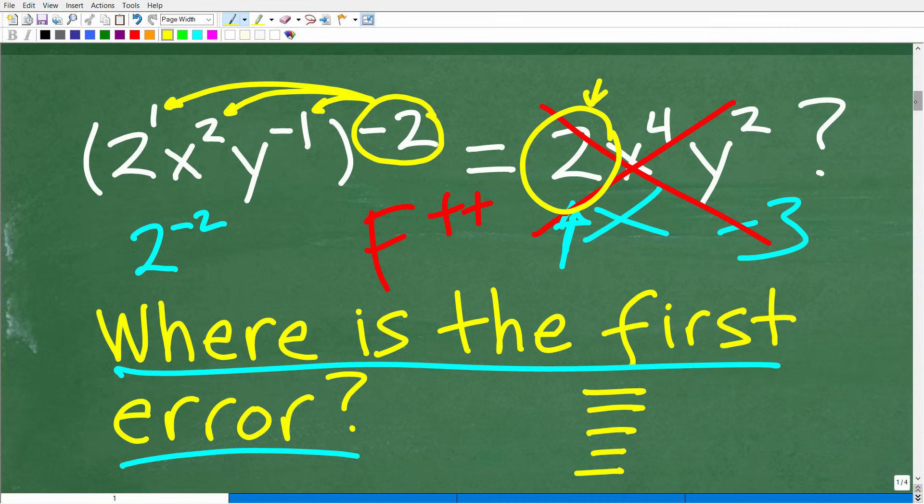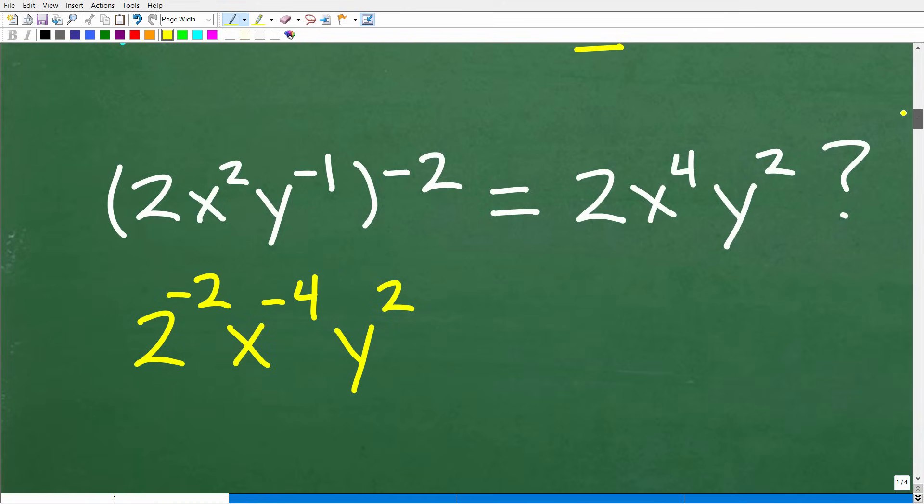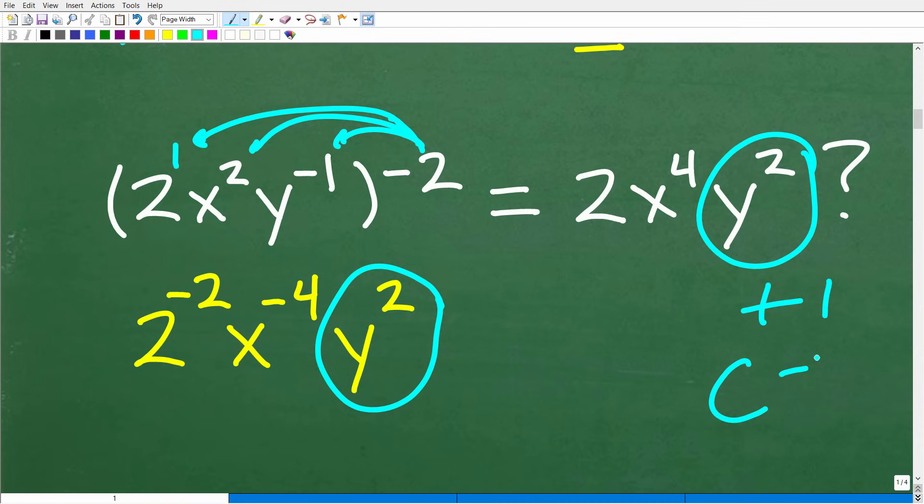All right. So let's go ahead and see what we need to do. The first thing we have to do here is apply that property. We have an outside exponent to all these inside powers. So we're going to multiply that negative two times all this. Remember there's a two to the first right there. And when we do that, we have negative two to the first. That's going to be 2⁻². X² is going to be X⁻⁴, negative two times two. And then Y⁻¹ times this negative two, Y². So this Y², this is right.